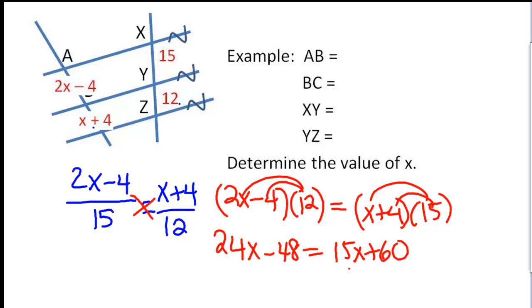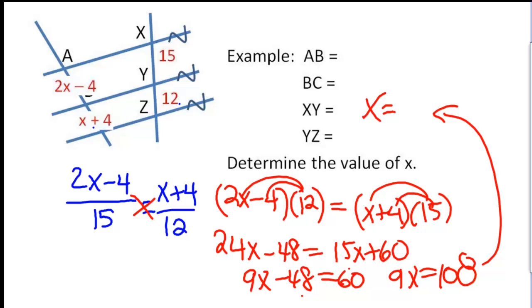Subtract 15X from both sides and you'll get 9X minus 48 equals 60. Add 48, you'll get 9X is 108. And divide away the 9. 108 divided by 9 would be 12. That's what they want us to do is figure out what X is. We have done that. We're done. So we'll be looking at some similar problems in the very near future.